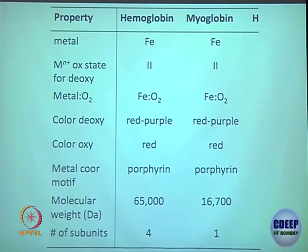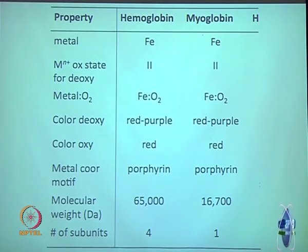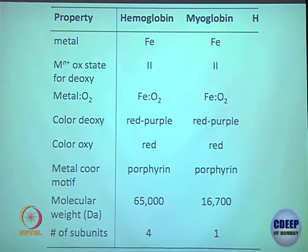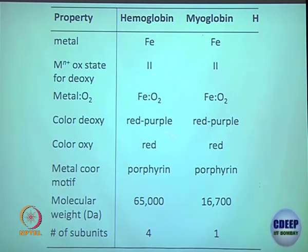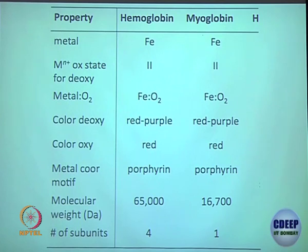That cooperativity is missing from myoglobin — it has only one porphyrin center, so there is no one to communicate with. Comparing hemoglobin and myoglobin: myoglobin has one iron center, hemoglobin has four. So hemoglobin has approximately four times the molecular weight of myoglobin. Both have porphyrin and both are red in color in the oxy form. Oxy form means oxygen is bound; deoxy form means oxygen is not bound. Oxy-hemoglobin, deoxy-hemoglobin, oxy-myoglobin, deoxy-myoglobin — these terms will be used.